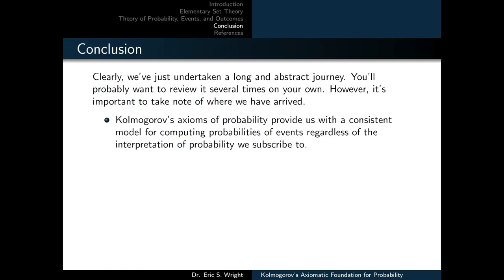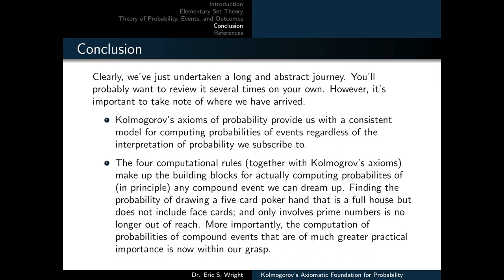We've undertaken a long abstract journey — you'll want to review it several times. Kolmogorov's axioms provide a consistent model for computing probabilities of events regardless of which interpretation of probability you subscribe to; his axioms apply to all valid interpretations. The four computational rules derived from his axioms make up the building blocks for computing probabilities of any compound event, putting even complex queries — like the probability of a full house without face cards involving only prime numbers — within reach.